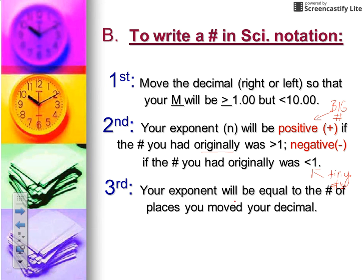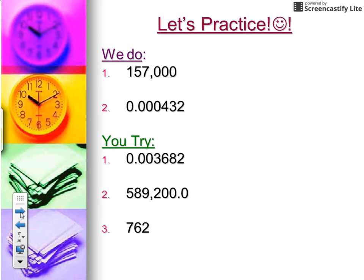Step three: the exponent itself is equal to the number of places that you moved your decimal. So in step one, when you're moving your decimal you need to count how many places you moved it — that value equals the exponent. The sign of the exponent depends on whether it was a large quantity or a tiny quantity before you changed it. Let's look at some examples and practice.